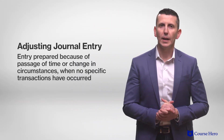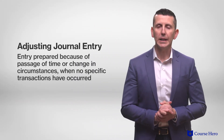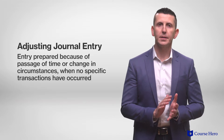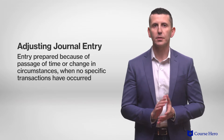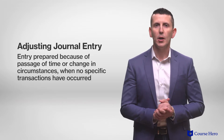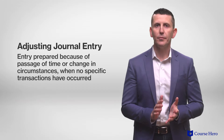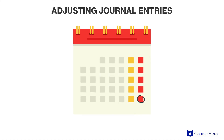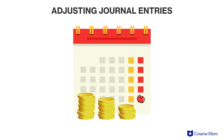An adjusting journal entry is an entry prepared because of the passage of time or change in circumstances when no specific transactions have occurred. Adjusting journal entries are usually recorded at the end of an accounting period after preparation of the unadjusted trial balance.